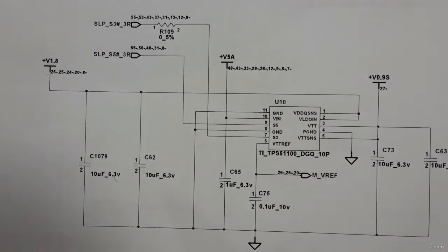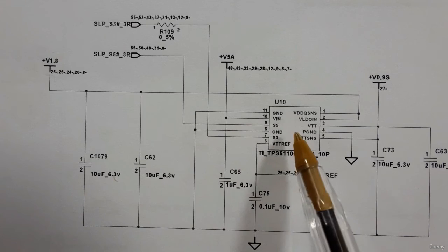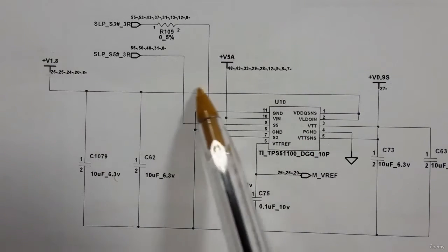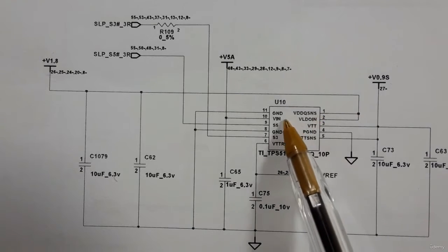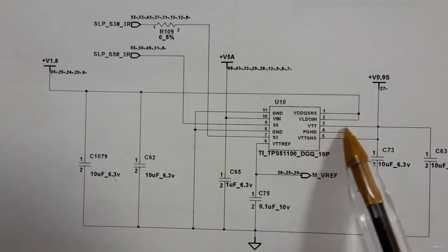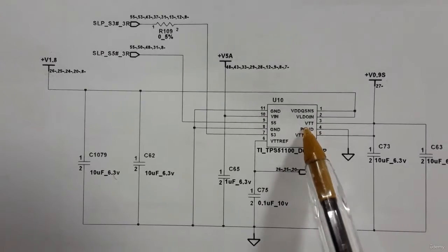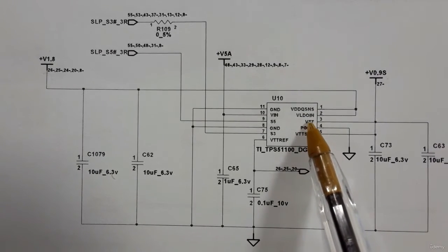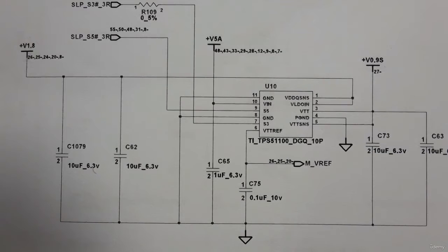The 1.8V input feeds into this IC, and we get VTT as the output — the voltage for terminals. The VTT output will be 0.9V.